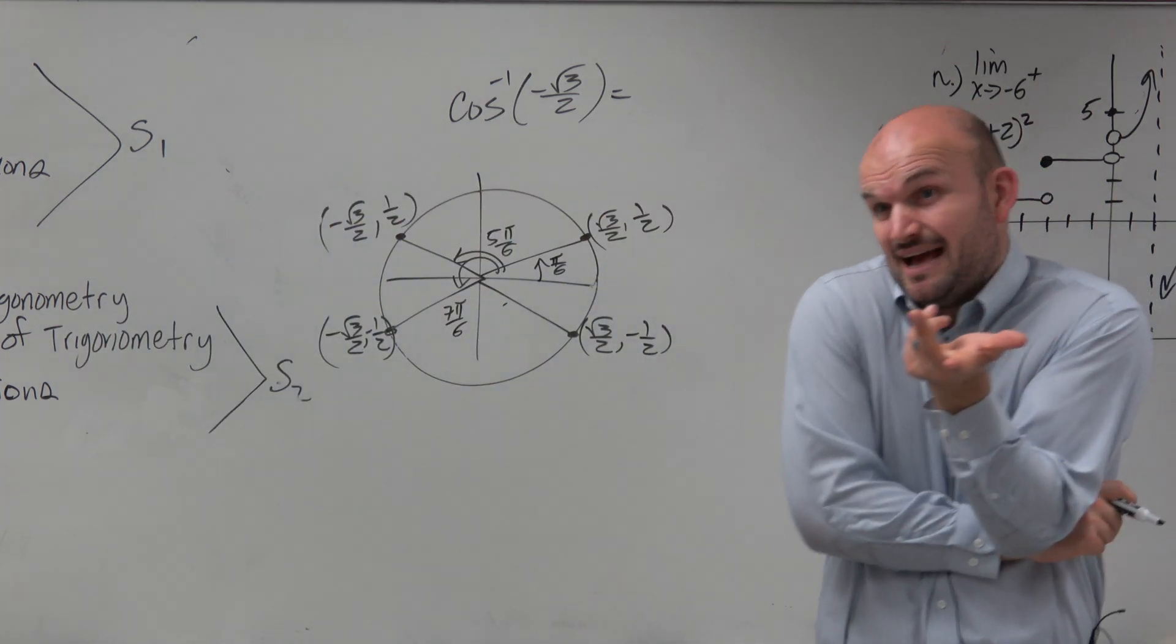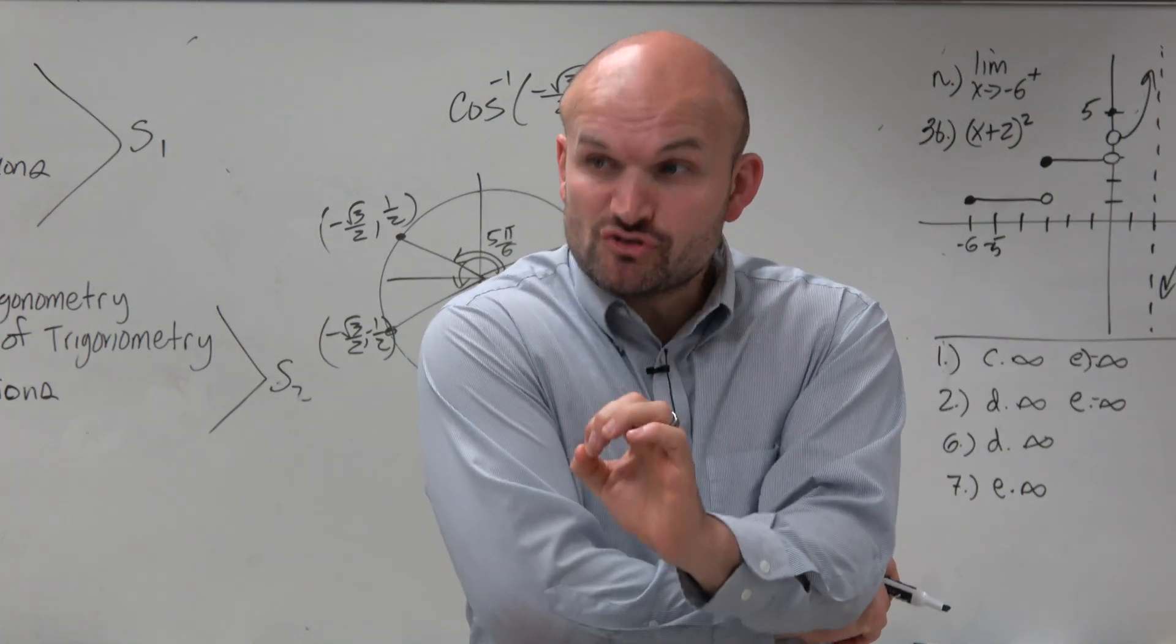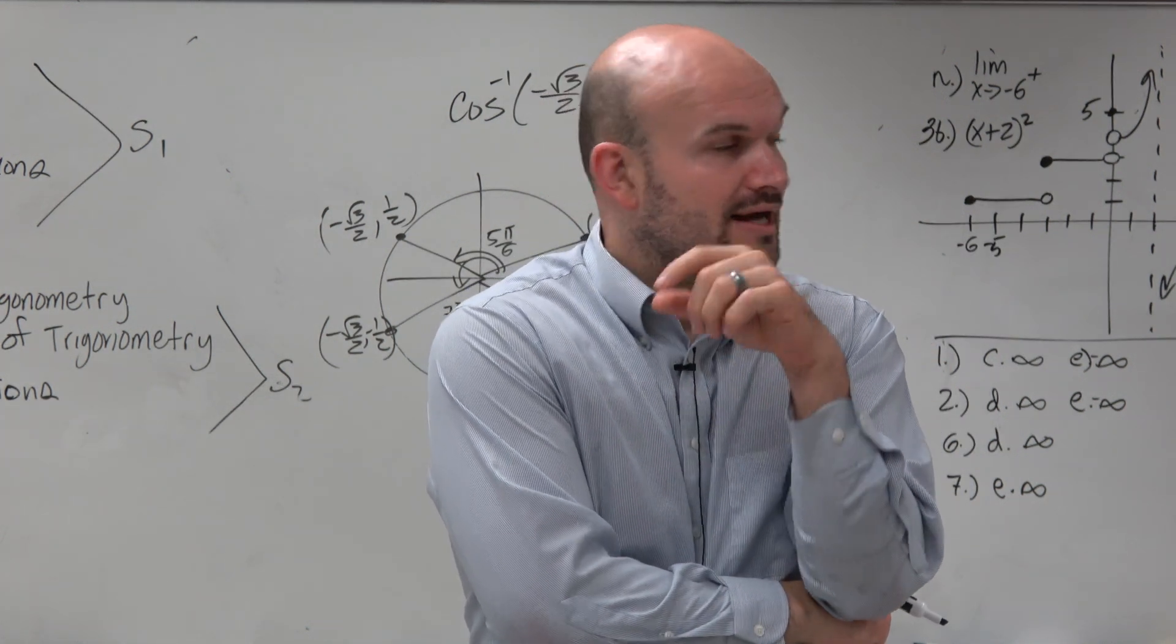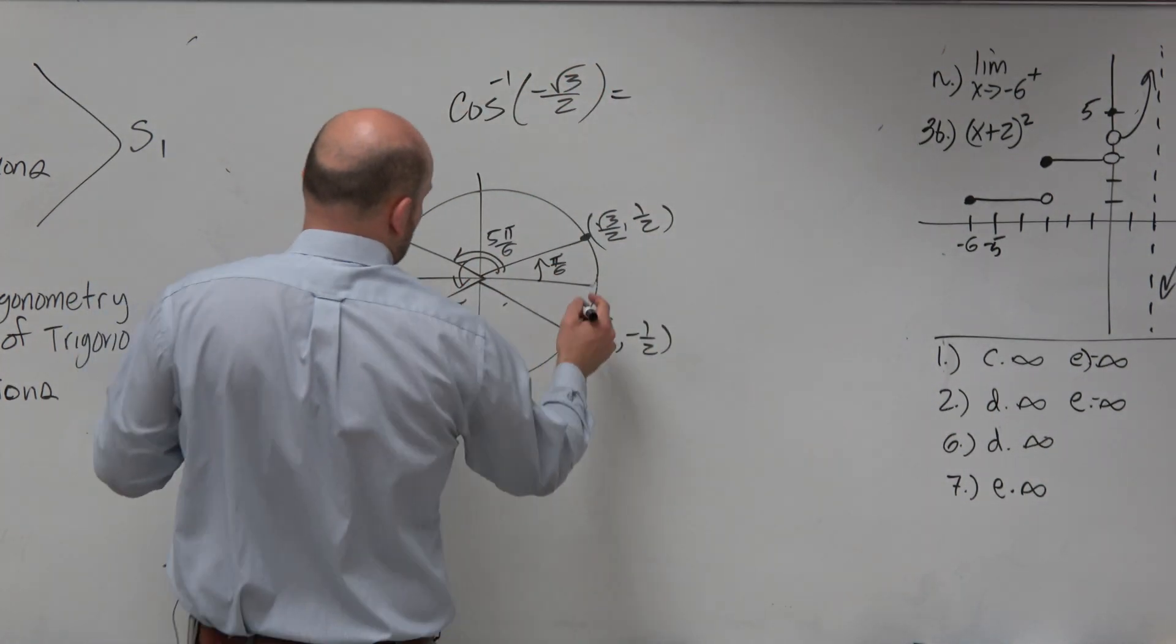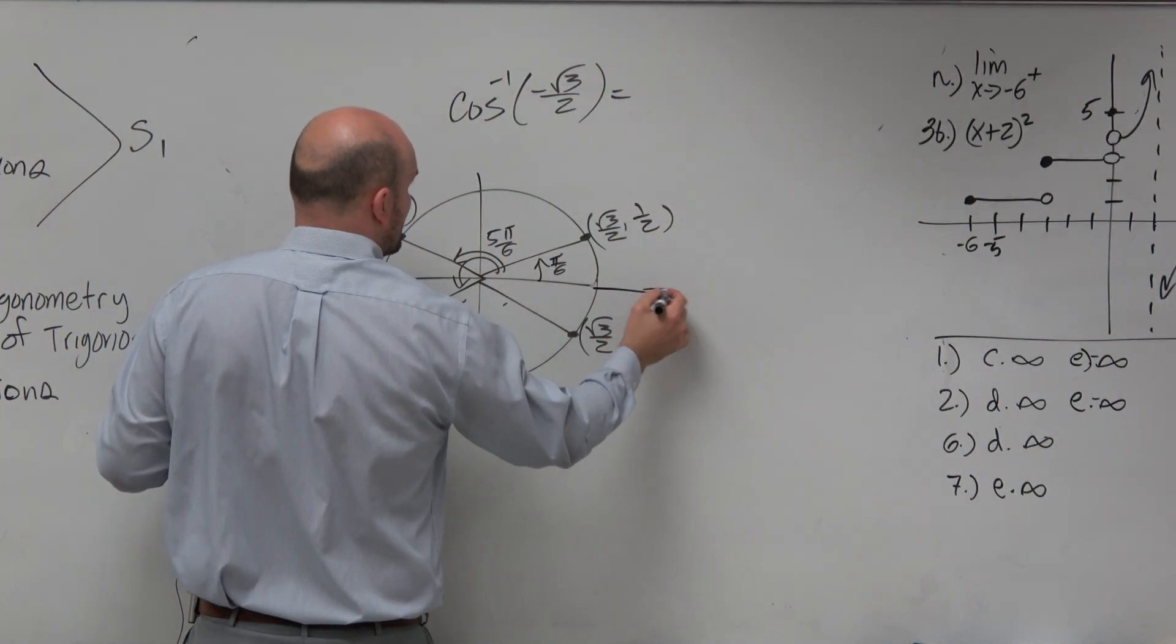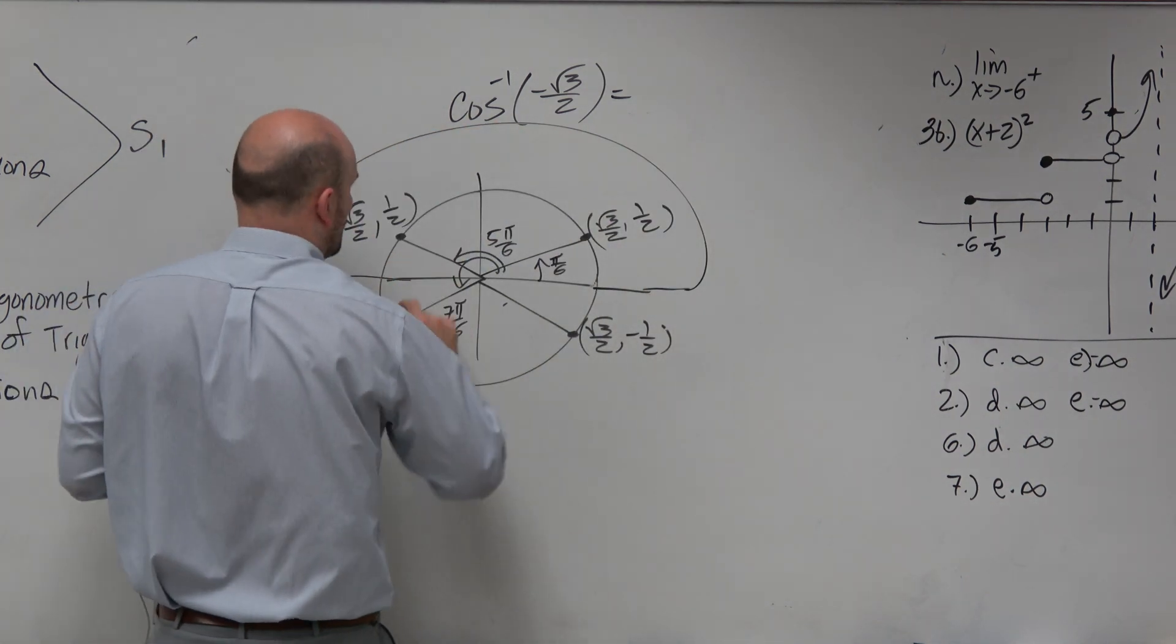So our answers are between these two. But we can't have both answers because it's an inverse function. We have a restriction that we applied. And the restriction for cosine is within the range we have restricted between the first and the second quadrant.